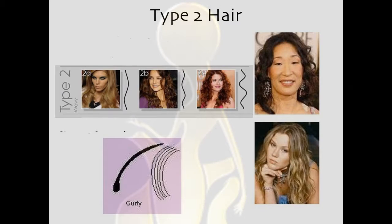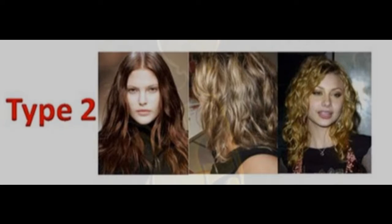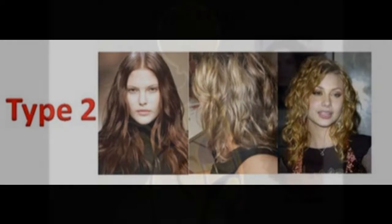Type 2 hair. Type 2 or wavy hair tends to be coarse with a definite S pattern to it. This means the wave forms throughout the hair in the shape of the letter S. Type 2 is very easy to handle, blowing out into a straight style or taking on curls with ease.